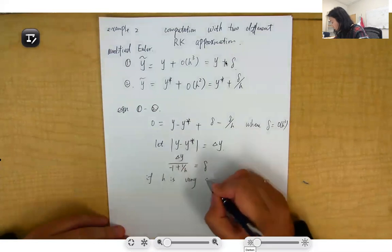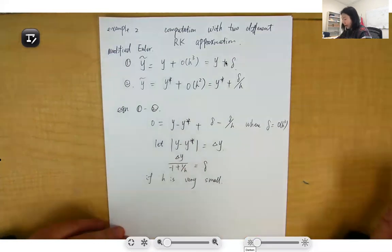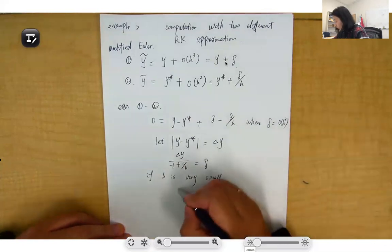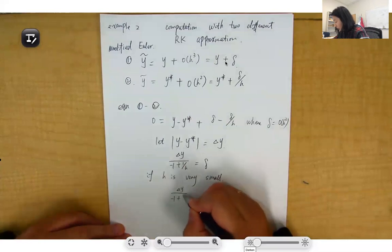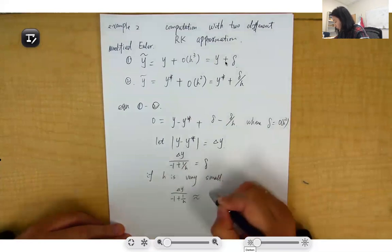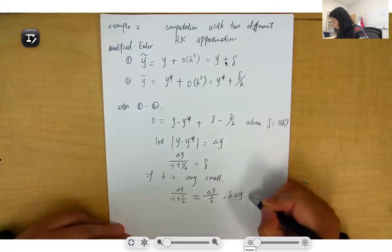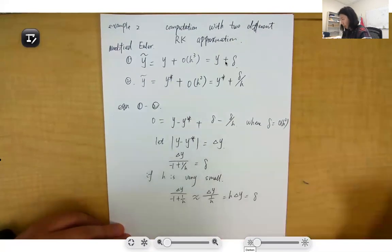If h is really small, very small, divided by h dominates. Then what you get is Δy/(-1 + 1/h), which will approximately be Δy divided by 1/h, which is h·Δy, and that is your error.